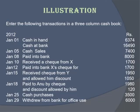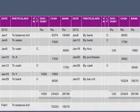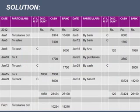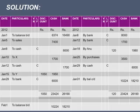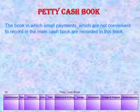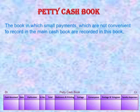Now let's see the solution of this example. In this way, you will solve a question on the triple column cash book — check it carefully. The last kind of cash book is the petty cash book, which is a book in which small payments that are not convenient to record in the main cash book are recorded.